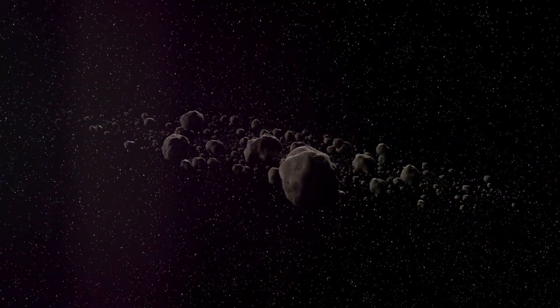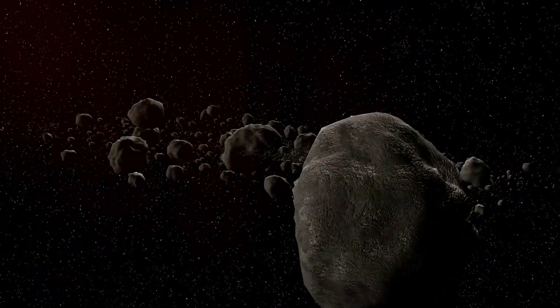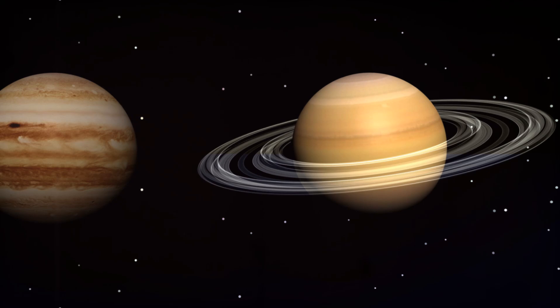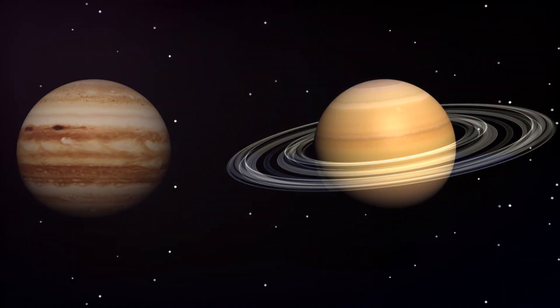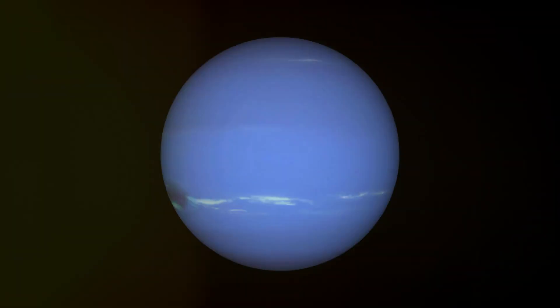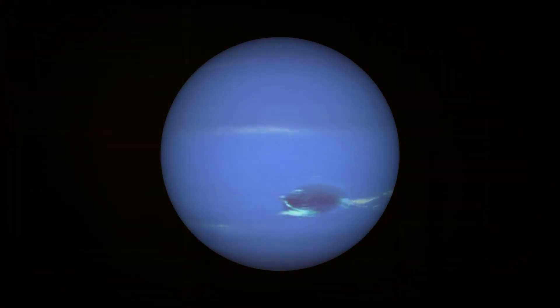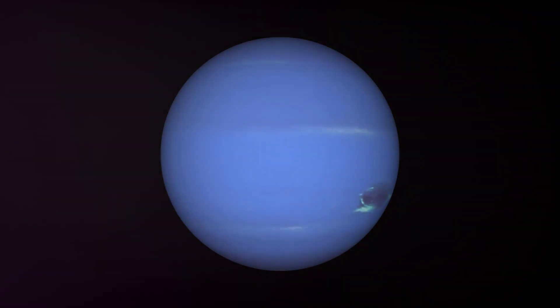Next, we encounter the asteroid belt, a ring of space rubble acting as a sort of cosmic divider between the inner and outer planets. Beyond this belt, we meet the gas giants, Jupiter and Saturn, with their impressive size and majestic ring systems. Further out, the ice giants, Uranus and Neptune, stand as the sentinels of our planetary family.